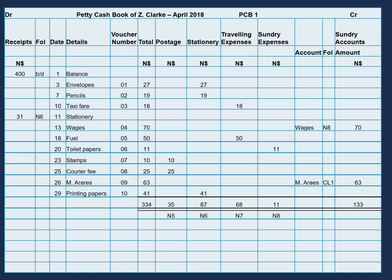Now we can restore our imprest amount. But how do we do that? We do that by taking the amount in our total column and subtracting our $31 that we received for stationary.